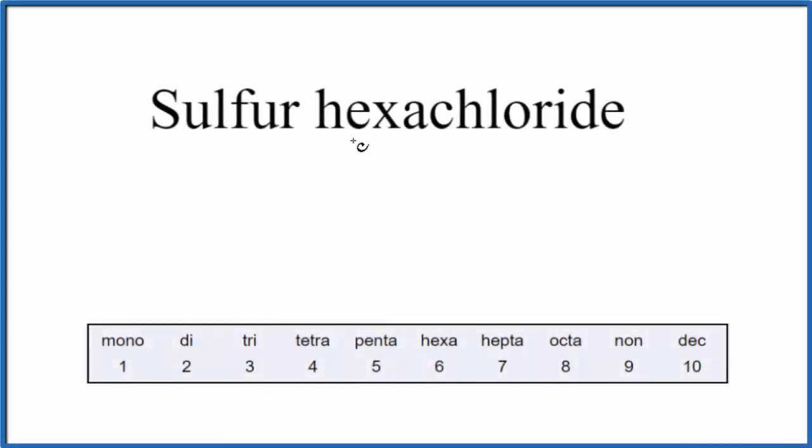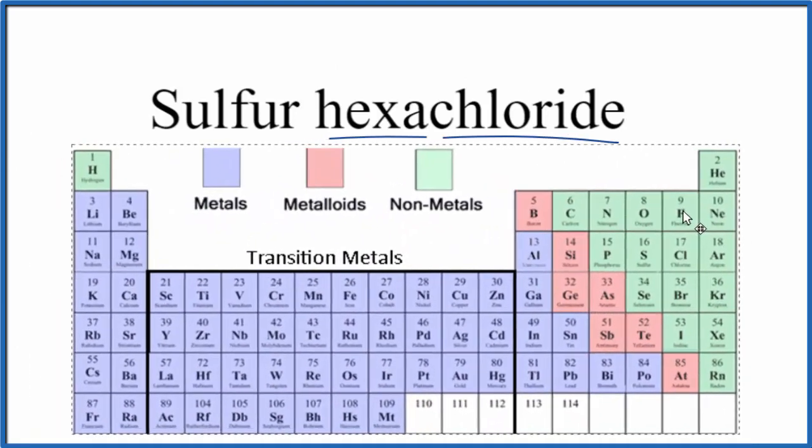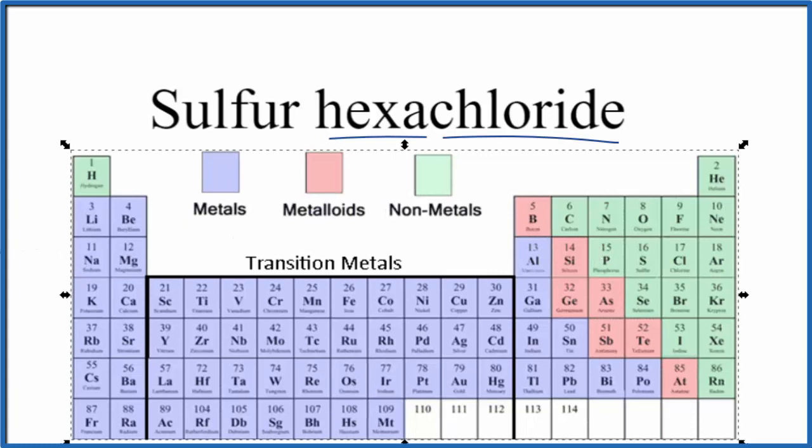To write the formula for sulfur hexachloride, we first need to figure out what type of compound we have. When we look on the periodic table here, we can find sulfur and chlorine. Sulfur is right here, and here's chlorine.